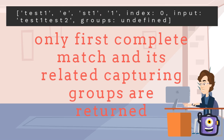and we get the first full match and all of its capturing groups with a few extra parameters. test1 is the full match, and e, st1, and 1 are the capturing groups. Index is the position at which the result was found. Input is a copy of the search string.